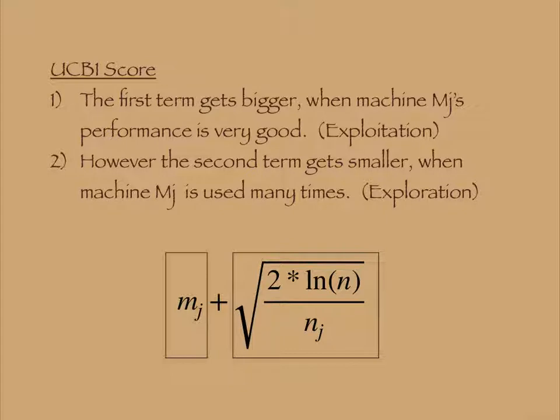However, the second term of UCB1 score gets smaller when Machine Mj is used many times. This part is for exploration of less used machines.